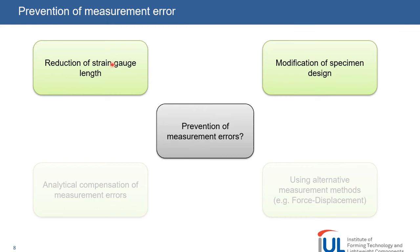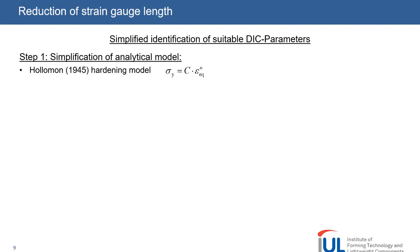For the first strategy, the leading question is: how much do we have to reduce the strain gauge length to get proper measurement values? To answer this question, a simplification of the analytical model is used by using the Holloman hardening model with only two parameters. These are the linear factor C, which defines the strength, and the hardening exponent N, which defines the hardening of a material. In these two diagrams, we can see the influence of the linear factor C on the discretization error for both specimen types.